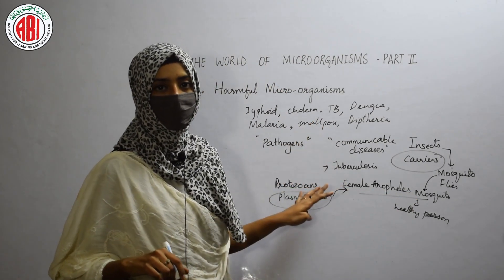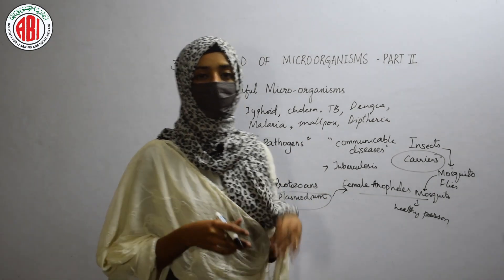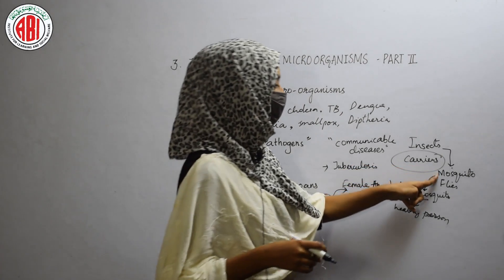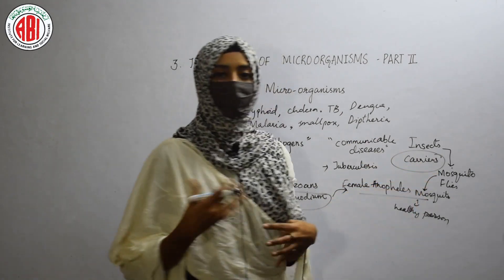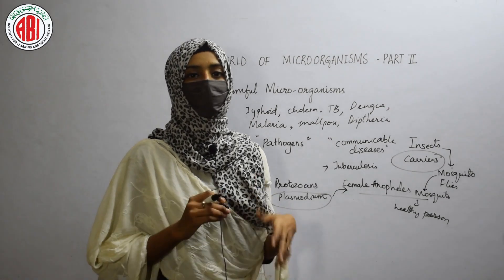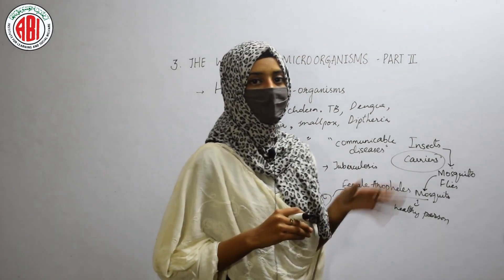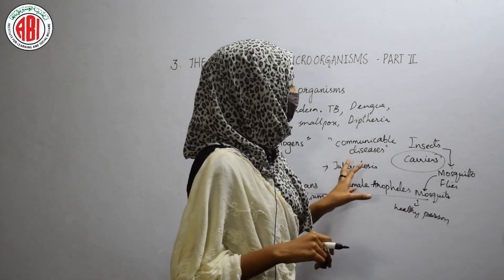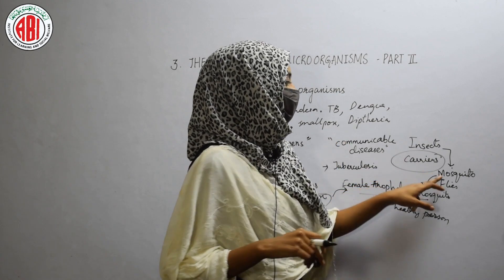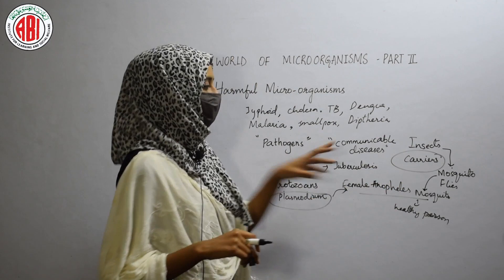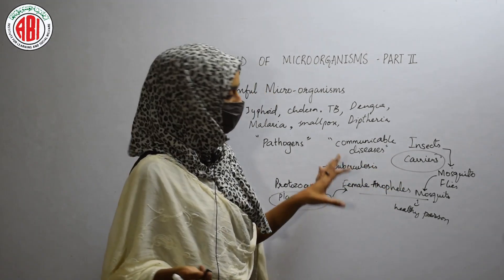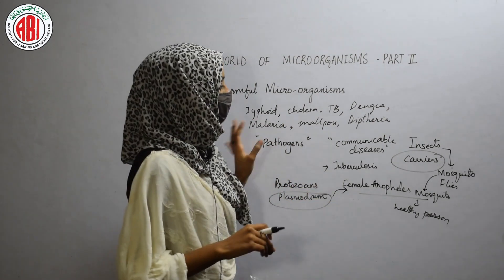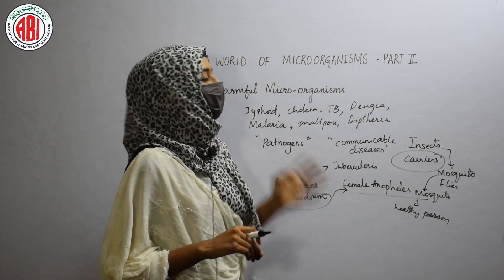In this way, disease from the infected person is carried to the healthy person through insect carriers like the female Anopheles mosquito. In order to control these kinds of diseases, we need to follow preventive measures to control the mosquito population. Mosquitoes and flies are usually present in stagnant water, so we should spray mosquito repellents and not allow water to stand in front of gates or lawns. This prevents the spread of diseases like dengue, malaria, and filariasis.